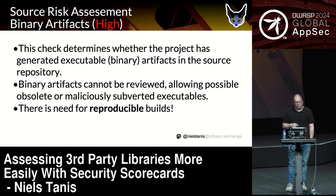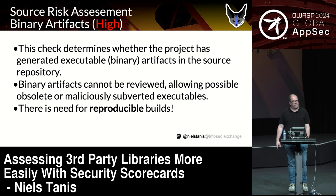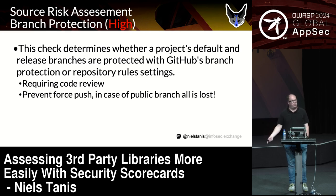What about binary artifacts? An executable put into a GitHub repo that's part of a package — how are you able to identify what's inside and its purpose? If it's nuget.exe, it's probably there for a reason. But it's hard if there's another executable where the source is totally not transparent, and that's a risk because they can't be reviewed. We should always aim for reproducibility in builds. Same counts for branch protection — it will check how branches are configured, and prevent force pushes that would eliminate history.